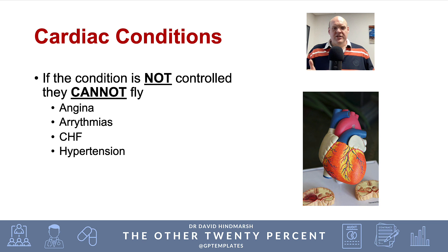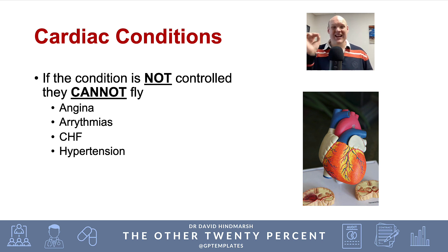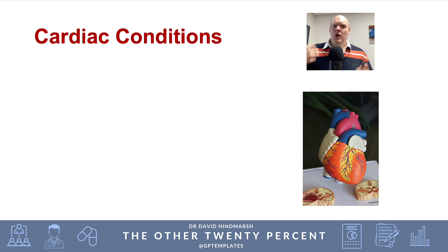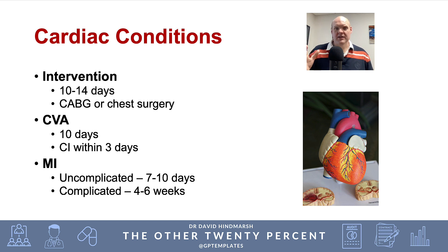With cardiac conditions, if the condition is not controlled the patient cannot fly. This covers four main conditions: angina, arrhythmias, coronary heart disease, congestive heart failure, and hypertension. Certain interventions also have a post-operative period where flying is restricted — around two weeks after CABG or any chest surgery. After a cardiovascular accident, patients really shouldn't fly for 10 days, and it's contraindicated within three days.